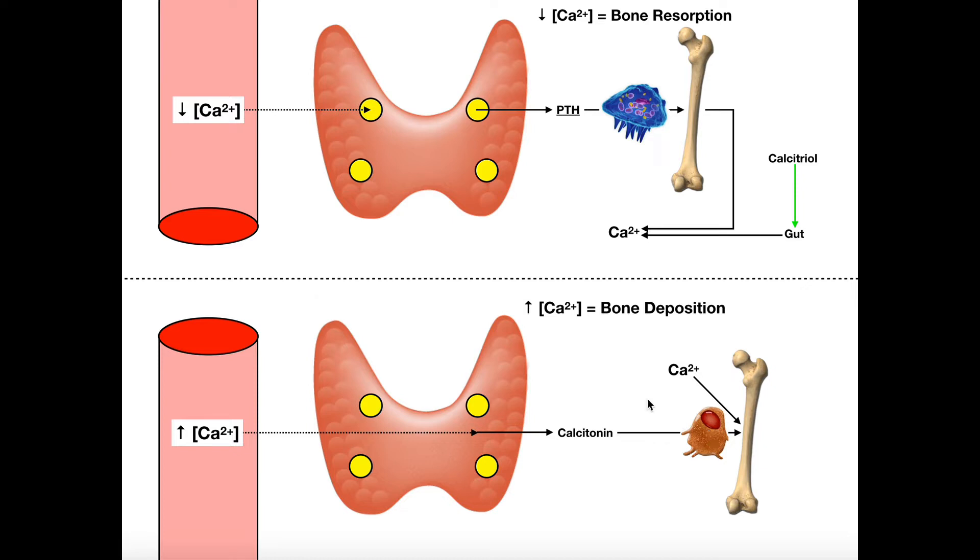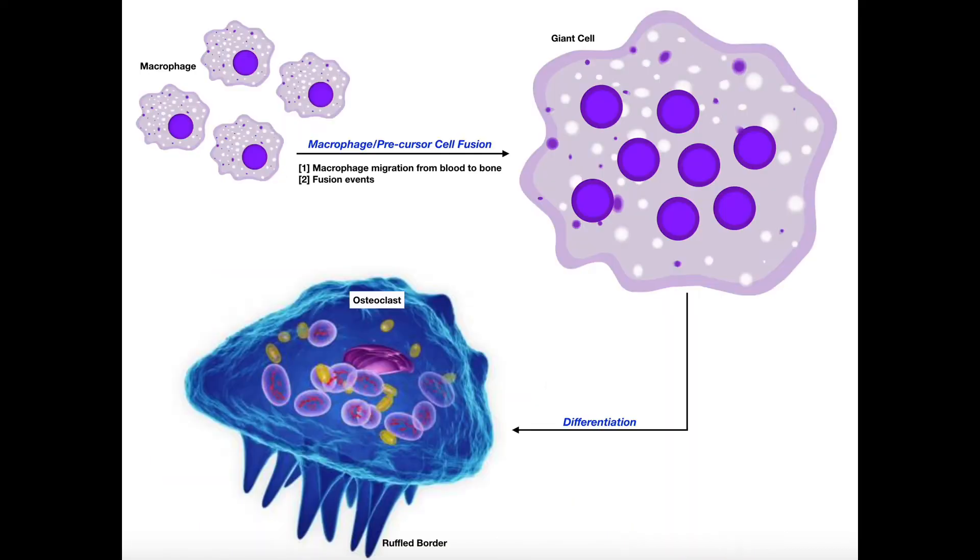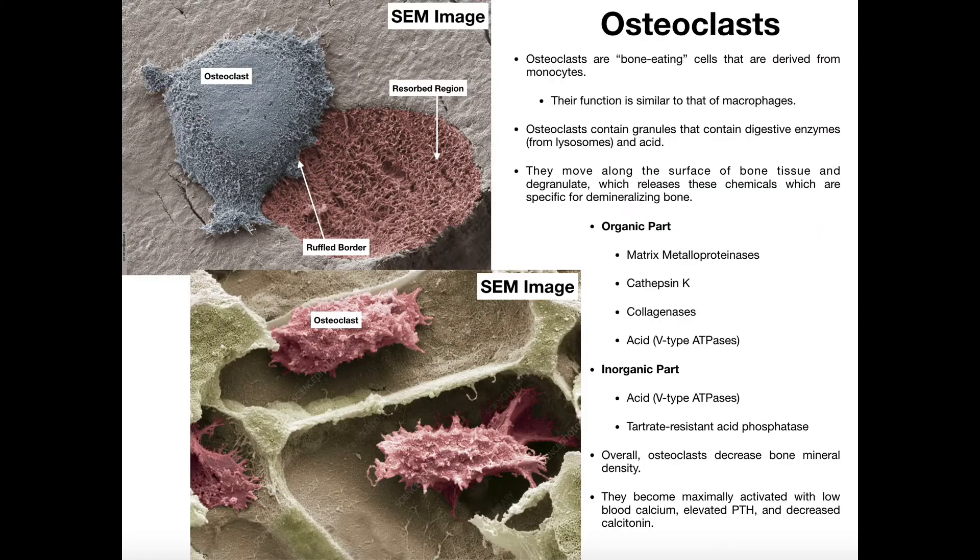In the previous two videos, we looked at mainly the functions of osteoblasts in bone deposition, so they increase bone mineral density, and then the functions of osteoclasts in decreasing bone mineral density through the process of bone resorption.